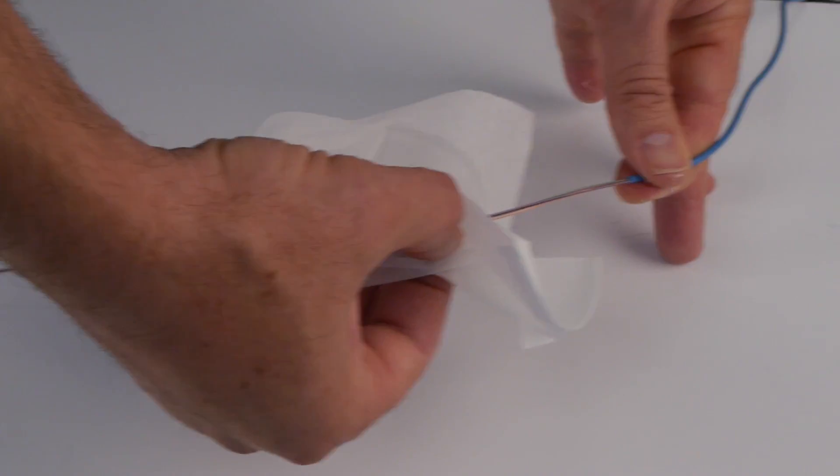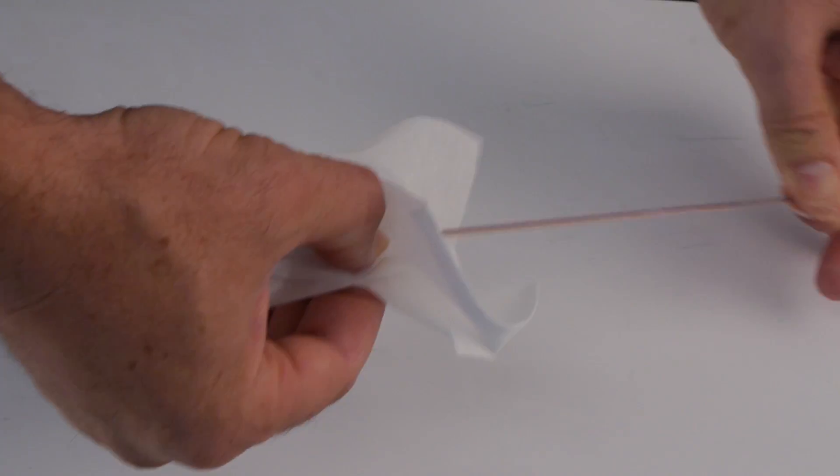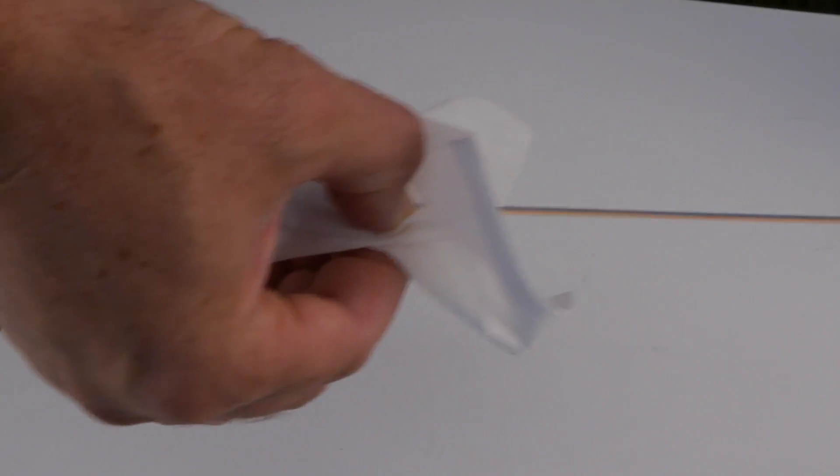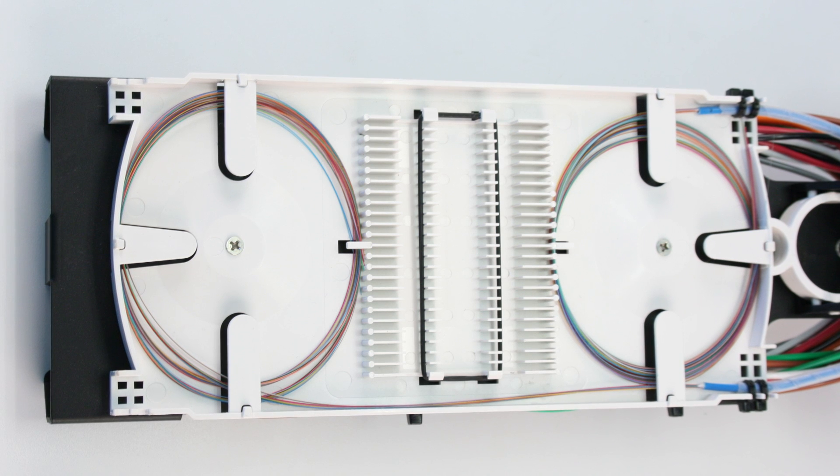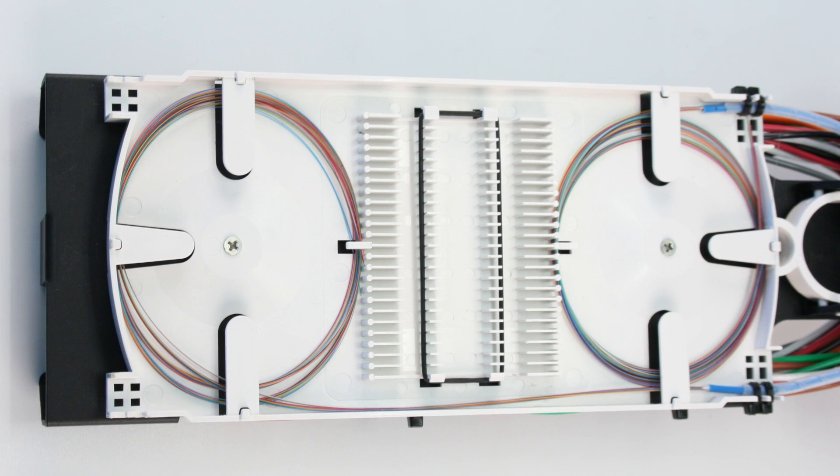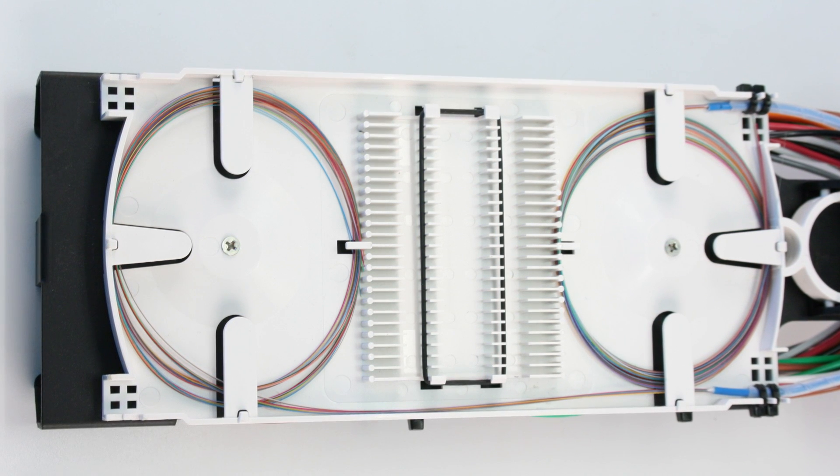Use dry lint free wipes to remove the buffer tube gel from the exposed fibers. Begin near the buffer tube and work towards the fiber ends. Prepare and splice fiber per the instructions of the applicable splice equipment manufacturer. Store fiber splice in excess fiber and splice tray.